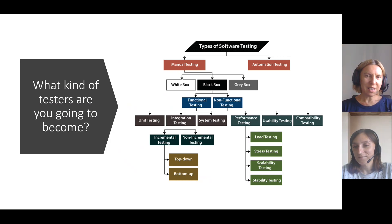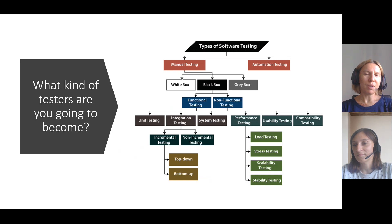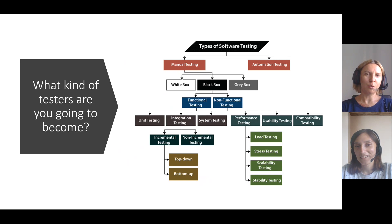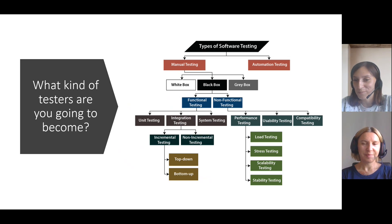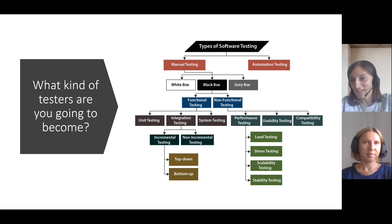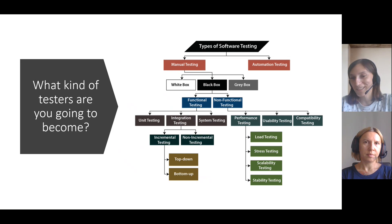We can start from the fact that we usually describe ourselves as functional testers. But at the same time, we are all manual testers. Why do we start from functional testing, not from manual? It seems like we're not going to perform non-functional testing or check GUI elements or something like that. Maybe functional testing means that this is the most difficult, the most crucial testing while checking our application.